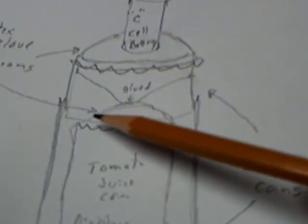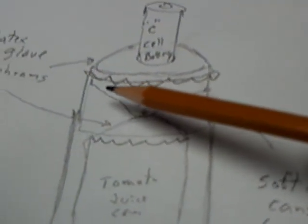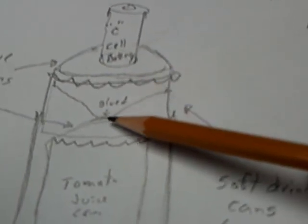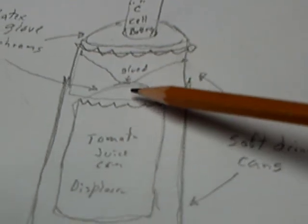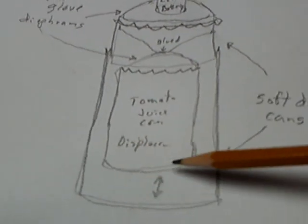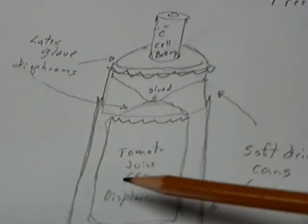And then on this can here, the tomato juice can, there's a metal support that I crazy glued to the top of this can here, right there with the crazy glue, so it hangs free in the can. And you notice mine doesn't make any noise because I put enough clearance on this.